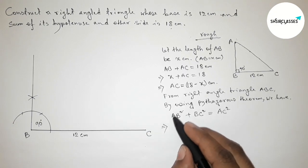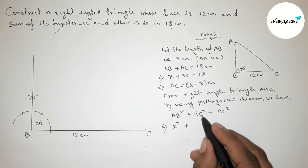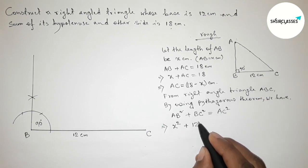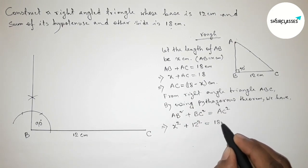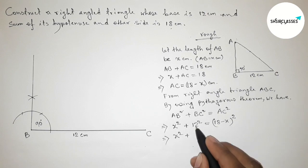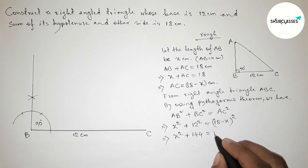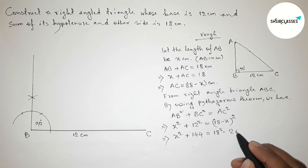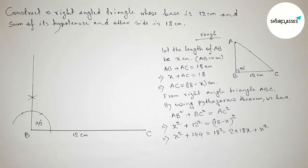Substituting the values: x² + 12² = (18 − x)². So x² + 144 = 18² − 2(18)(x) + x², which expands to x² + 144 = 324 − 36x + x².